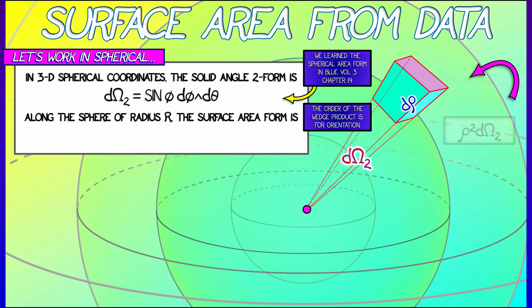To get the surface area form on a sphere of radius capital R, what you do is you replace ρ with capital R and then you get rid of the dρ so that you get an area form instead of a volume form. This area form, ds, is R² sin φ dφ wedge dθ.